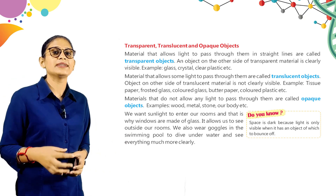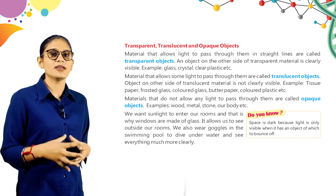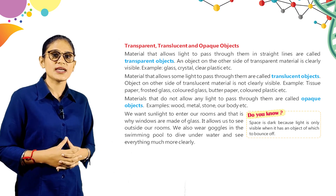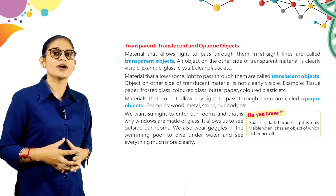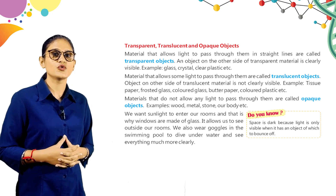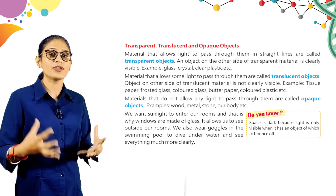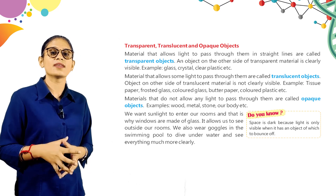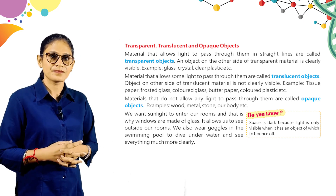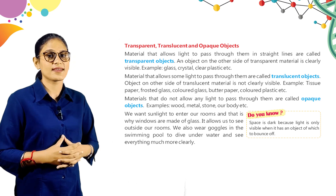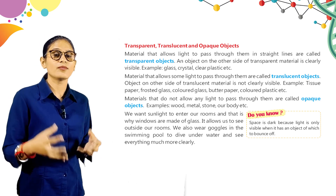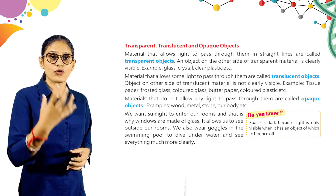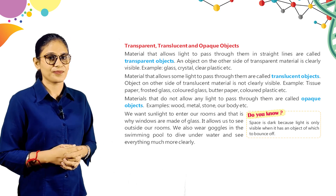We want sunlight to enter our rooms, and that is why windows are made of glass — it allows us to see outside our rooms. We also wear goggles in the swimming pool to dive underwater and see everything much more clearly. Glass windows let sunlight in and allow us to see outside, and goggles in swimming help us see clearly underwater.